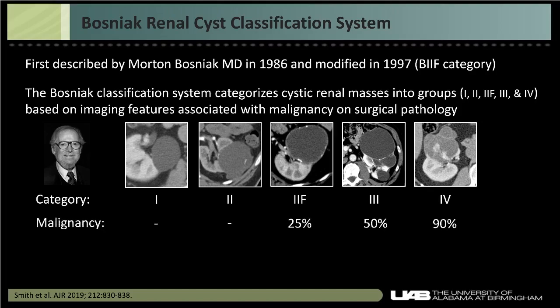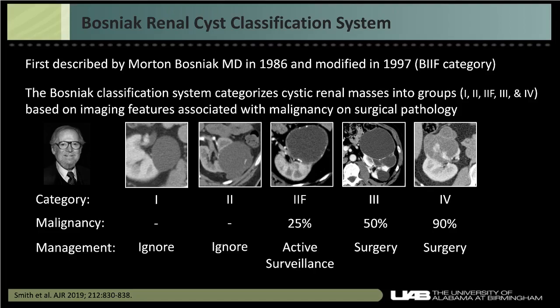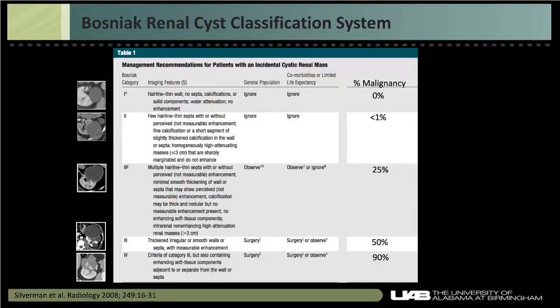Malignancy rates are well established: Bosniak 3s are 50% malignant, and Bosniak 4s are 90% malignant. More recent data suggests Bosniak 2F renal cystic masses could have up to a 25% malignancy rate. The original management plan was to ignore Bosniak 1s and 2s, active surveillance for 2F, and surgery for both 3s and 4s — though we'll discuss why that should probably change for group 3. This classification system with its imaging features is something you need to memorize as a radiologist.